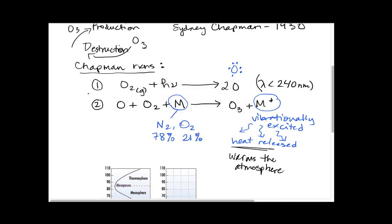These were my first two steps in the Chapman reactions. Notice that the net result of this reaction is that we have a net production of ozone.